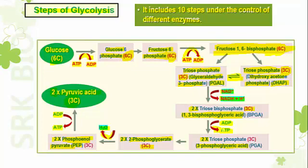The process started with one 6-carbon glucose molecule. When completed, two molecules of 3-carbon pyruvic acid are produced. Two molecules of 1,3-bisphosphoglycerate are converted into two molecules of 3-phosphoglycerate, generating 2 ATP molecules. Two molecules of phosphoenol pyruvate are also converted into pyruvic acid, generating another 2 ATP molecules.